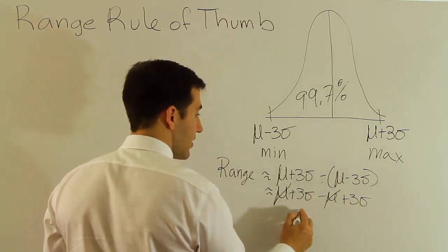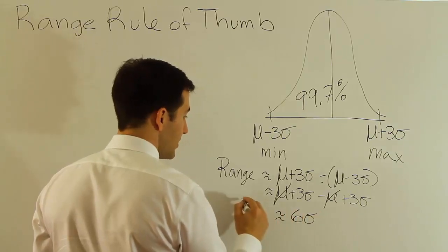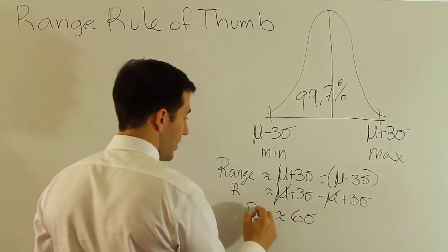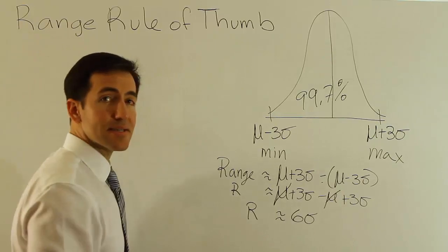Three sigma and three sigma make six sigma. So you have this relationship that says the range is approximately six sigma.